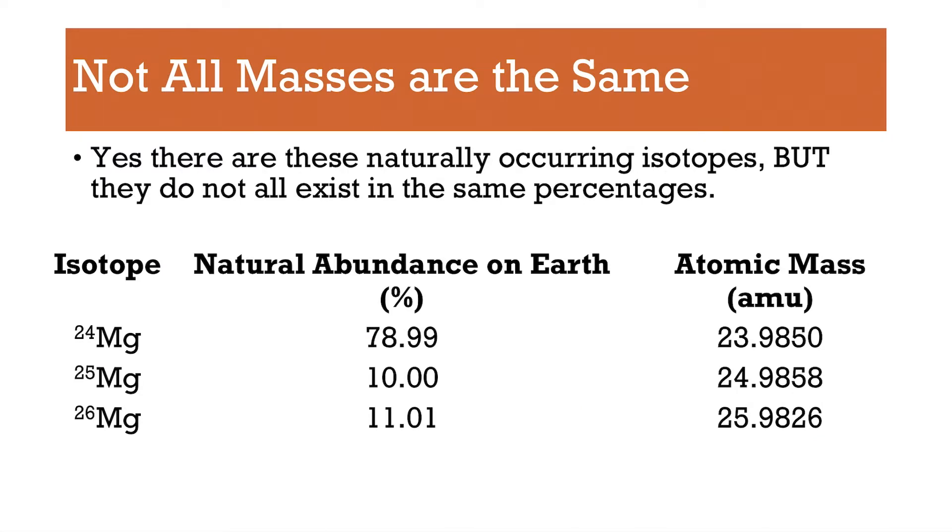But not all of these masses are the same. So yes, they all occur in nature, but they don't all exist in the same percentages. So if I was to send you on a mission, and said, okay, go outside, go bring me back magnesium atoms, about 79% of the atoms that you guys would bring back would have a mass of about 24 AMU. And then, about 10% of the atoms that you brought back would have a mass of 25 AMU, and about 11% would have an AMU mass of 26.